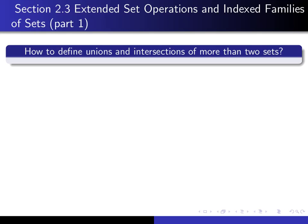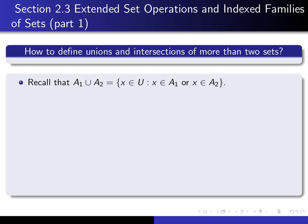This is the first in our series of lectures on section 2.3, in which we discuss extended set operations and indexed families of sets. In this video, we're going to talk about how we can define unions and intersections of more than two sets. For this purpose, instead of calling my sets A and B, I'm going to call them A1 and A2.